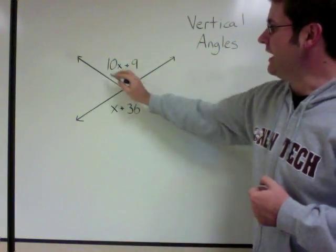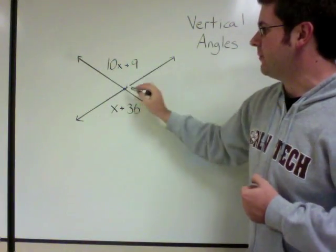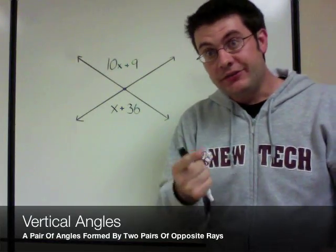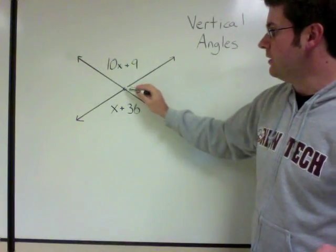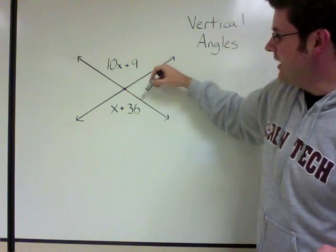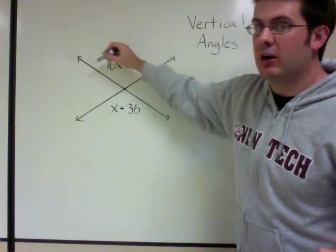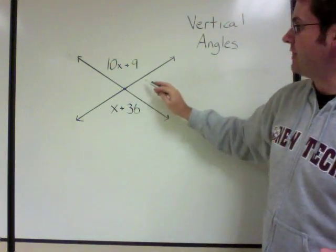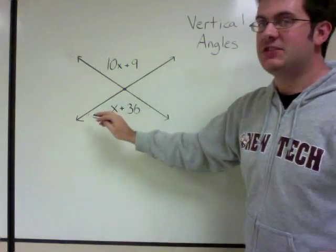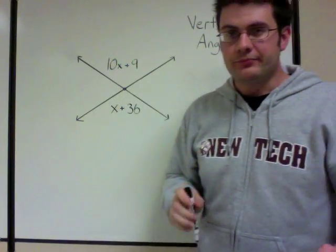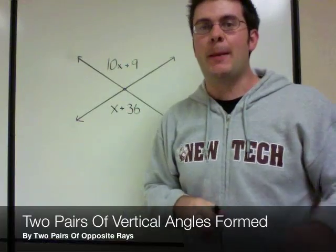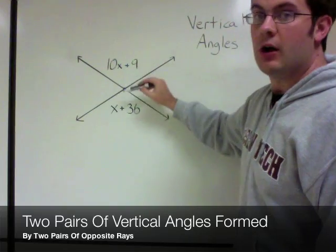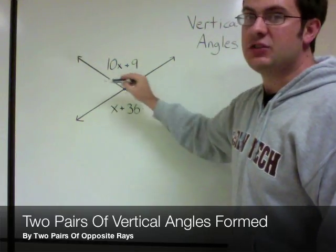Here we have an endpoint with four rays emanating from it. Vertical angles are formed by two pairs of opposite rays. We have one ray and a ray going in the opposite direction — that's one pair of opposite rays. Then this ray goes in the opposite direction of that ray — our second pair. Two pairs of opposite rays form two pairs of vertical angles.